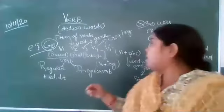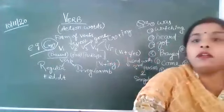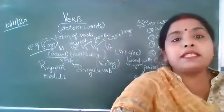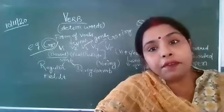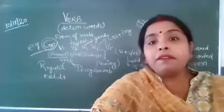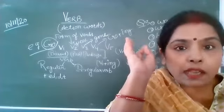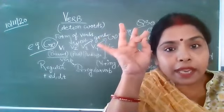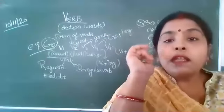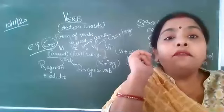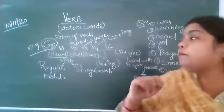Now comes V5. V5 is V1 plus S or ES. Jab verb mein hum S ya ES laga dete hai, tab hum usko V5 form bolte hai. V5 form hamaara kahan lagta hai — jab hamaara person third hota hai, yaani he, she, it hota hai, or singular hota hai, ya koi bhi naam agar singular hota hai, tab V5 form ho jata hai.